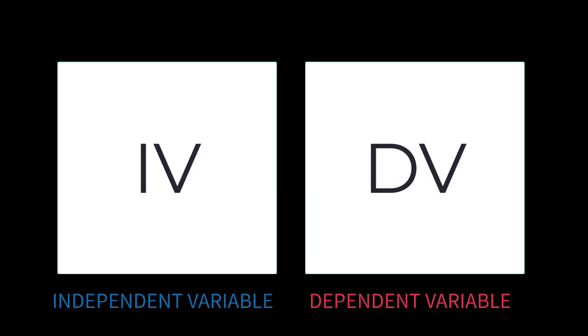Today we're going to talk about independent and dependent variables, and the focus will be on understanding how these operate in research. Now, to keep it simple, we're going to use examples that have just one independent variable and one dependent variable, even though sometimes research projects will involve many variables.